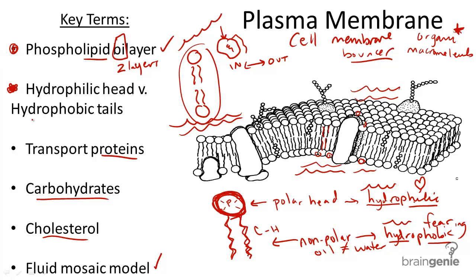So we've covered the phospholipid bilayer and hydrophobic versus hydrophilic. Let's talk about transport proteins. Transport proteins are used for structure and for transporting substances, primarily in and out of the cell. This happens through active and passive transport, depending on the substance — an important way to get substances, especially those that are large or charged, in and out of the cell.